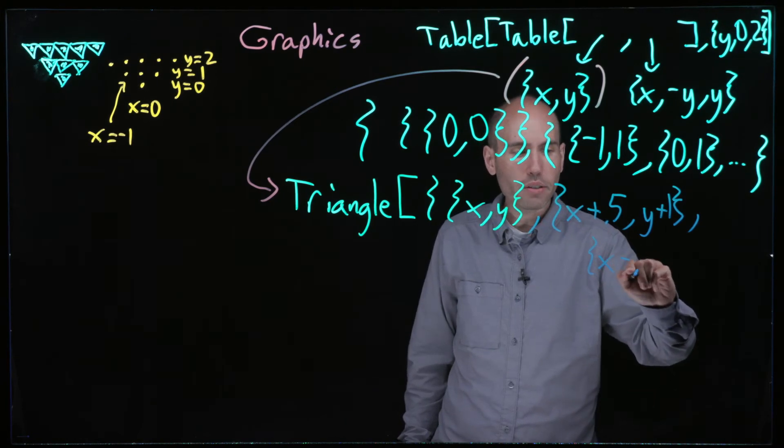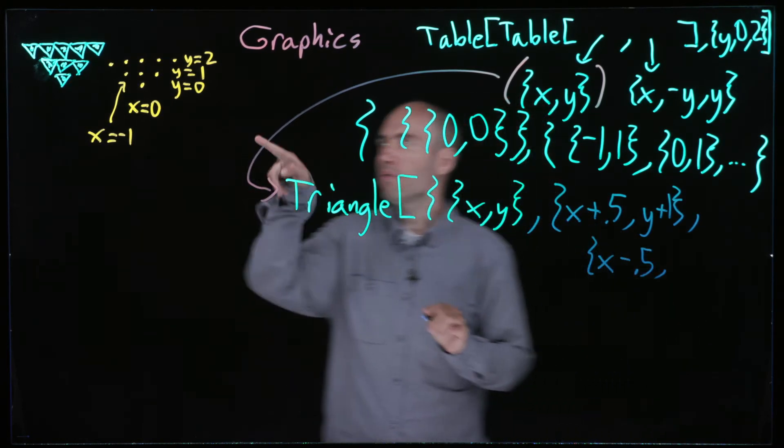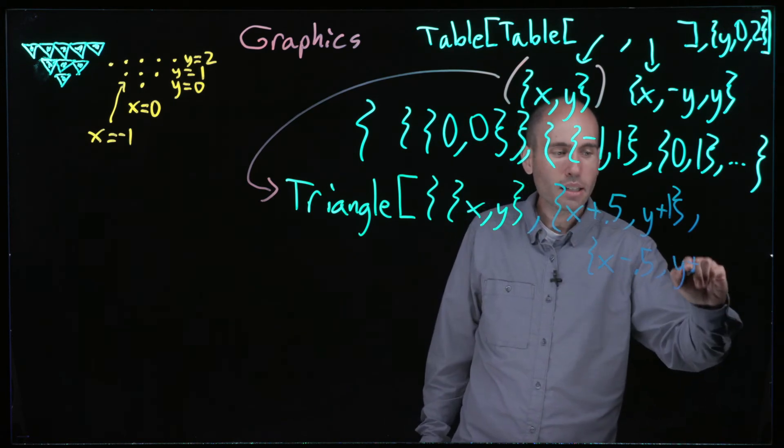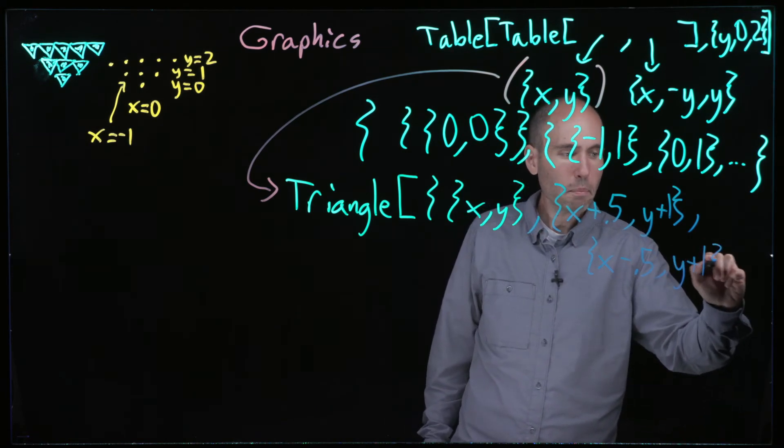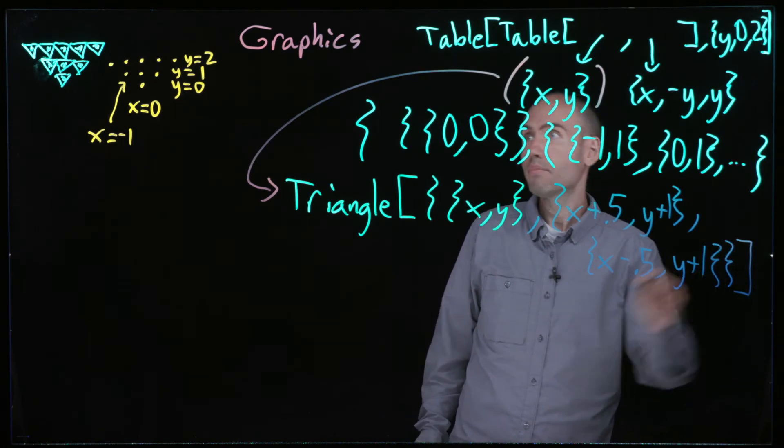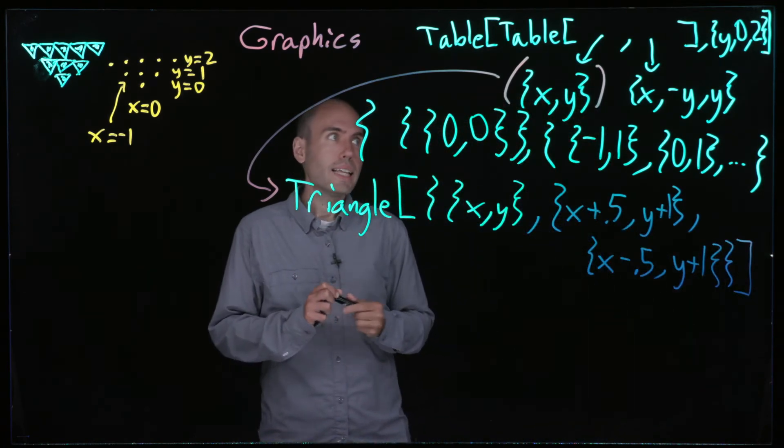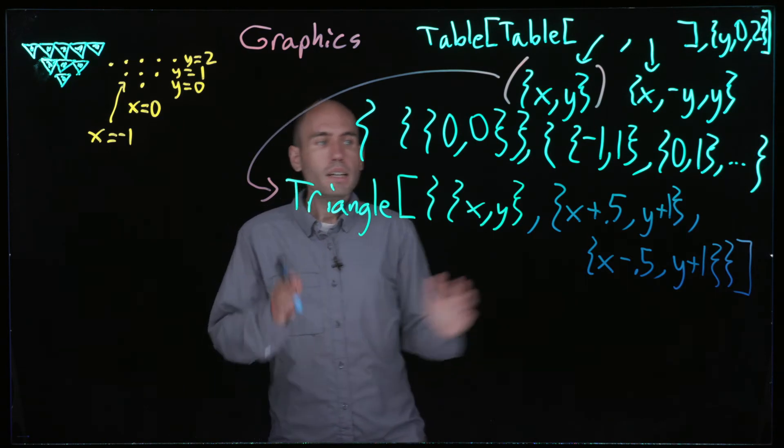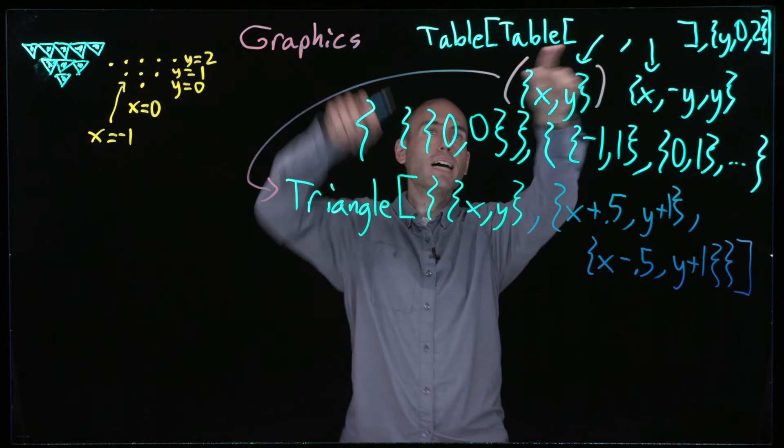So I have two of the three points of the triangle, two of the three vertices. Next one: x minus 0.5. This is the upper left, so that's why it's minus 0.5, and it's the same height, so y plus 1.